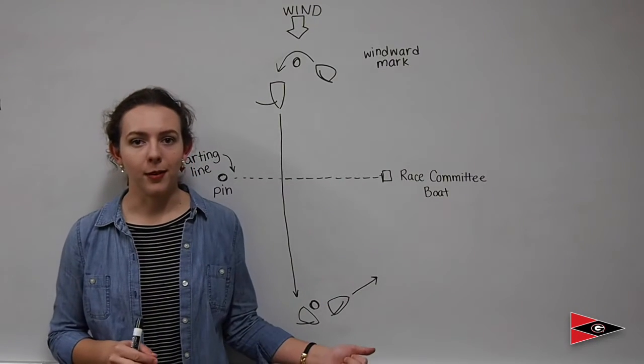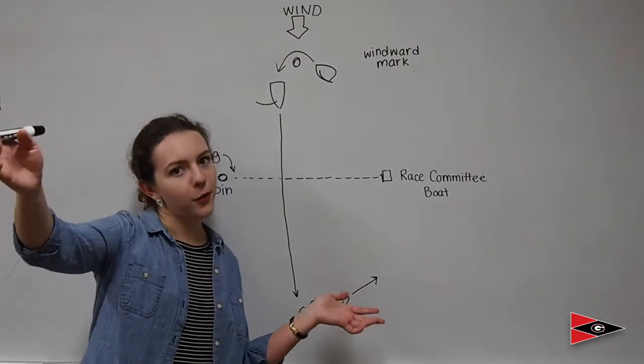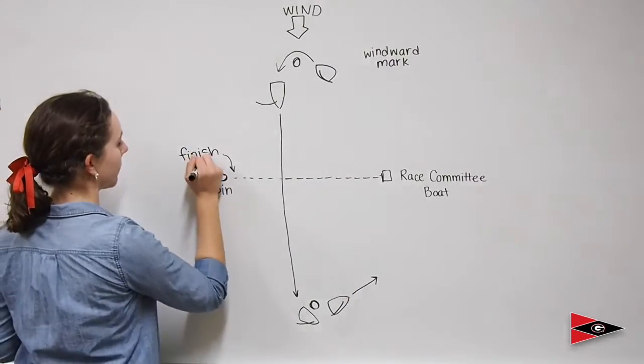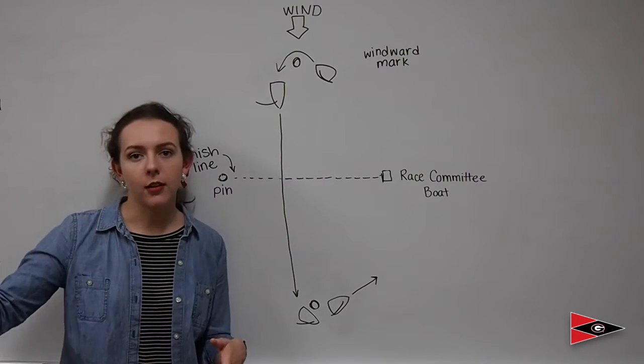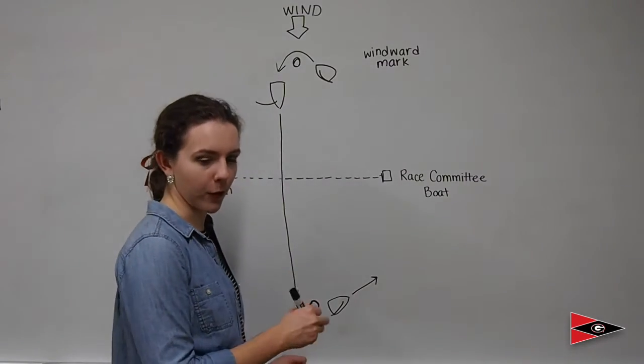After rounding the leeward mark, the boats are aiming for the old starting line, which is now the new finish line. So to get up to our finish line, we will have to tack back and forth between starboard tack close hauled and port tack close hauled in our zigzag pattern, just like our first windward leg.